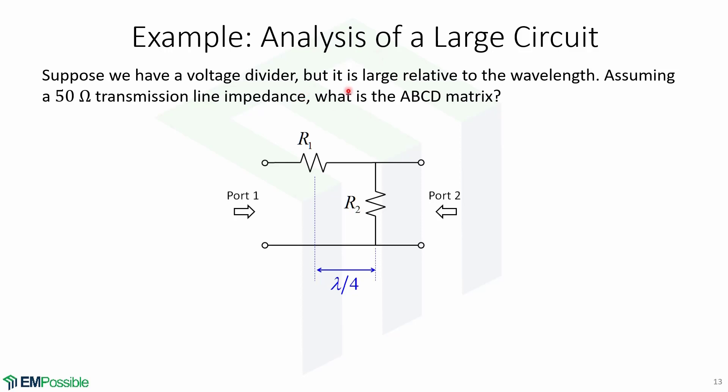Suppose that we have a voltage divider, but now it is large relative to the wavelength. We assume a 50 ohm transmission line impedance. What is the ABCD matrix? This is a picture of the two-port network, which we have a resistor here, which is separated by a length of transmission line of lambda over 4. And here we have the second resistor. This is port 1 and this is port 2.